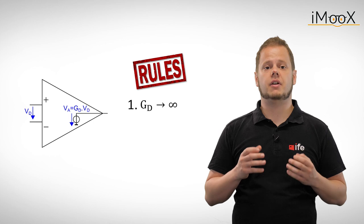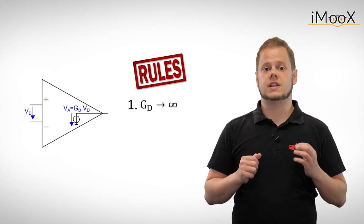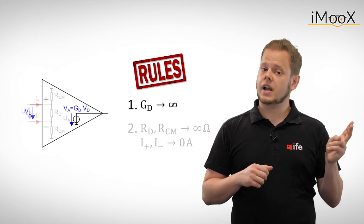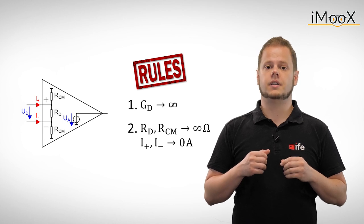The first rule: an operational amplifier has a very high differential mode gain GD, which means that the slightest change of input signals can be detected. The second rule refers to the input impedance for both common and differential mode.